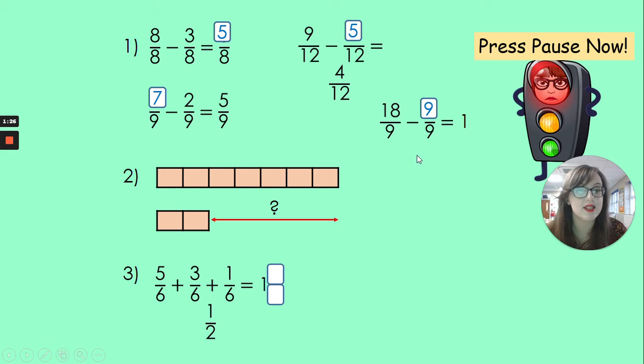So 18 ninths take away 9 ninths equals 9 ninths or 1 whole. Here we've got 2 bar models and the bottom one is missing an amount, it's missing 5 sevenths.